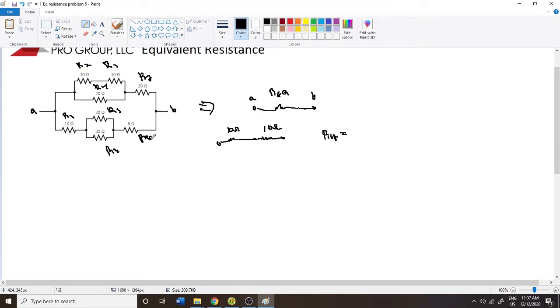So RA is equal to R2 plus R3, which is equal to 10 plus 10, which is equal to 20-ohms.